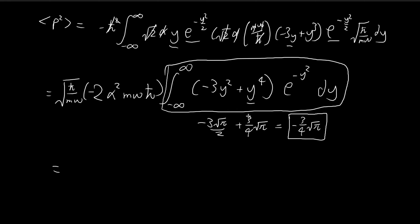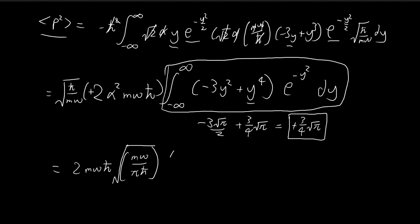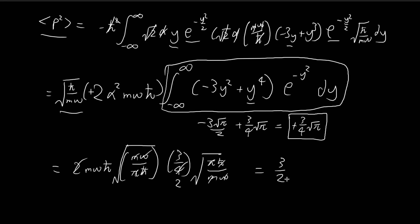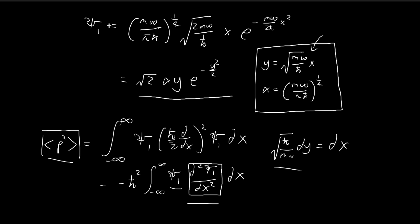Now we can combine this with the prefactor to arrive at the expected value. First, the negative signs cancel out, which is always a good thing. Alpha-squared equals the square root of mω over πℏ. We have 3/4, and the square root of π combines with and perfectly cancels the π term. The factor of 2 also cancels, so in the end we have 3/2 mωℏ. This is the expected value of p-squared for the first stationary state.